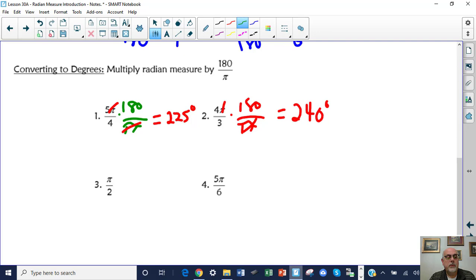Pi over 2 multiplied by 180 over pi. Pis cancel, and 180 over 2 is 90 degrees. 5 pi over 6 times 180 over pi. Pis cancel. Then you multiply 5 sixths times 180 and you get 150 degrees.